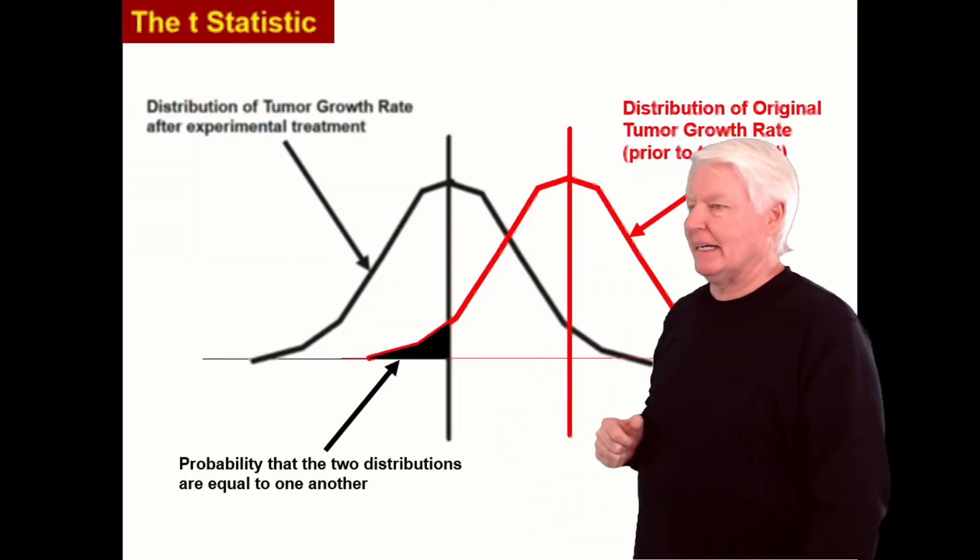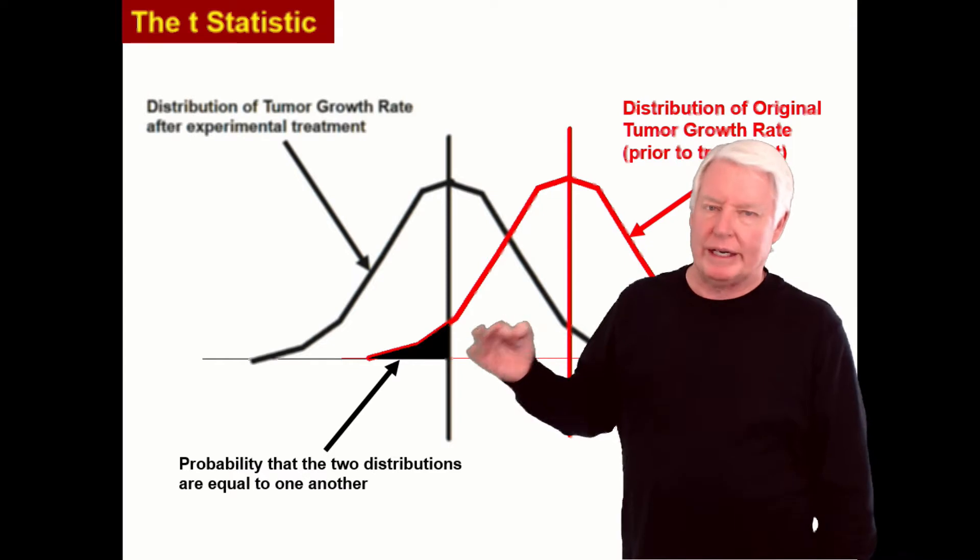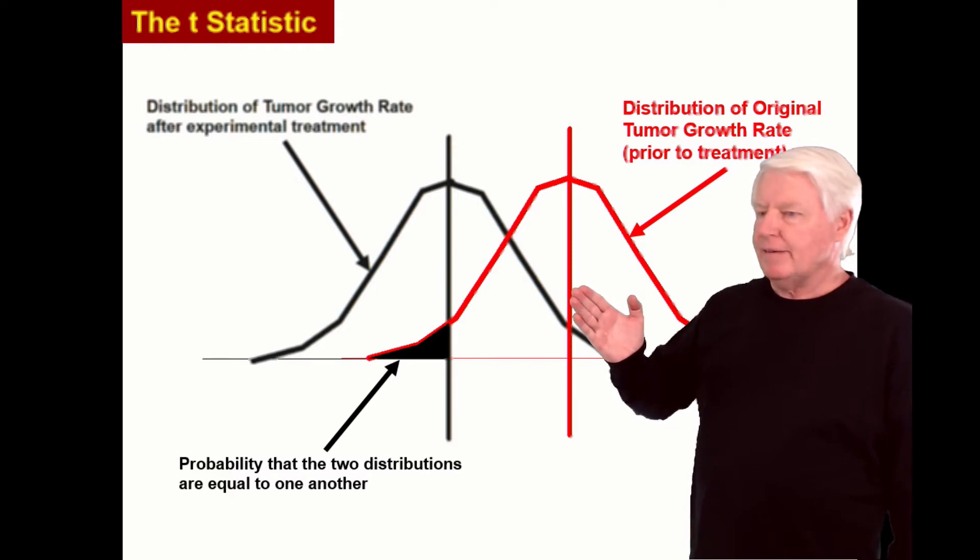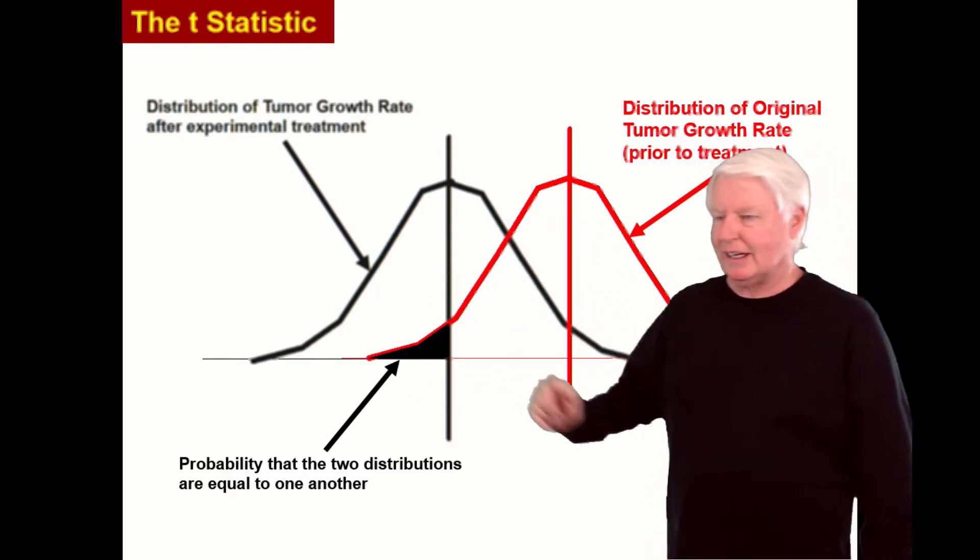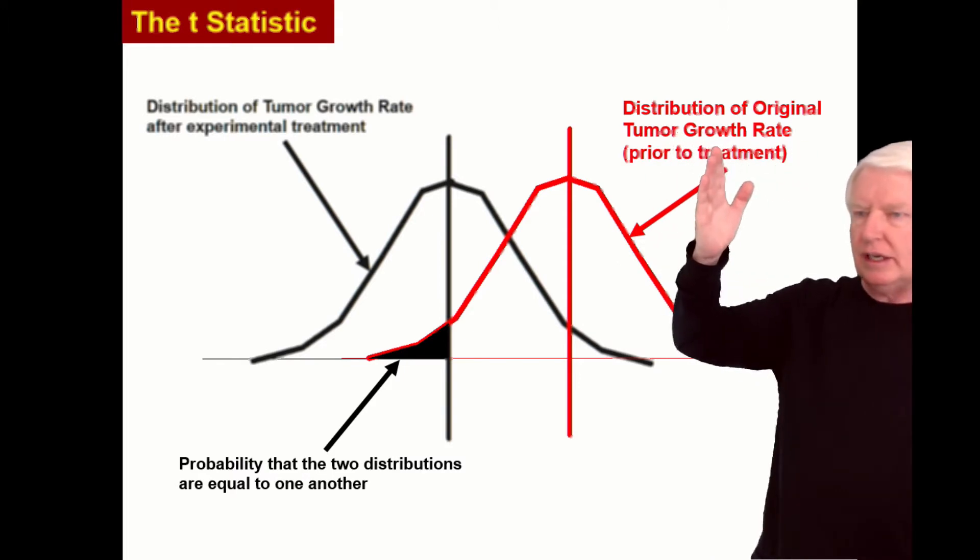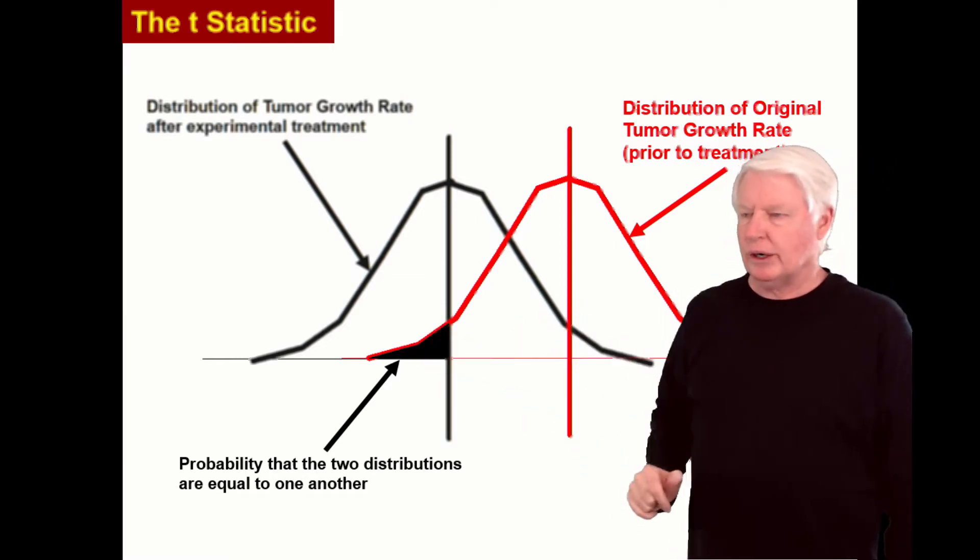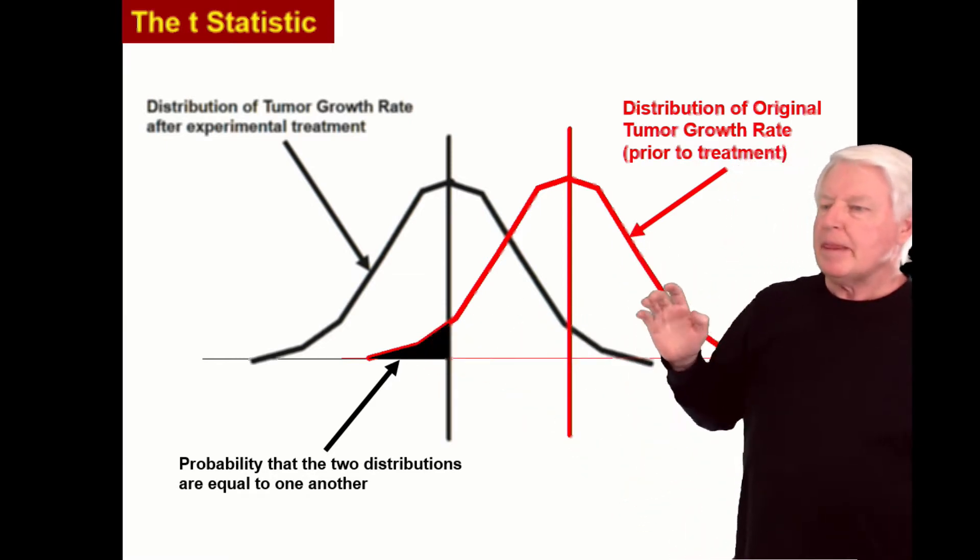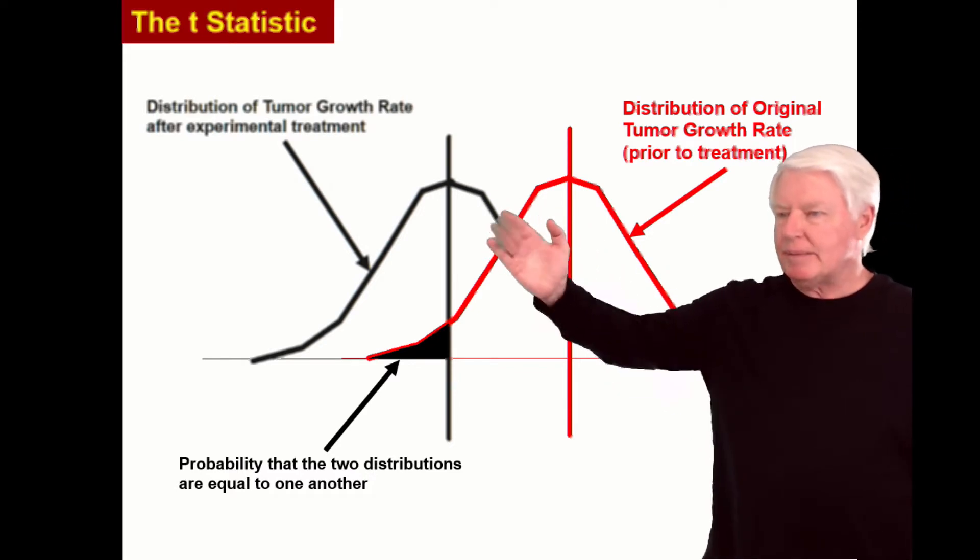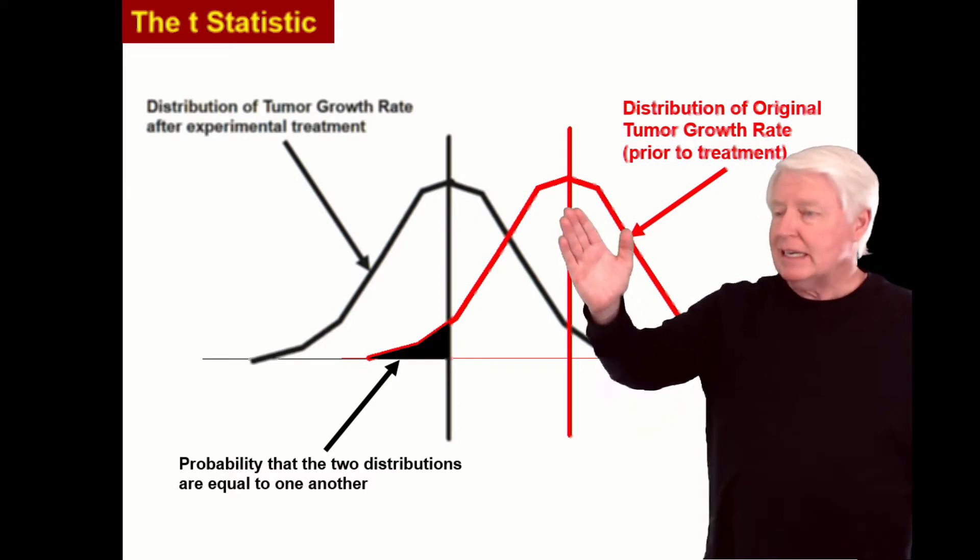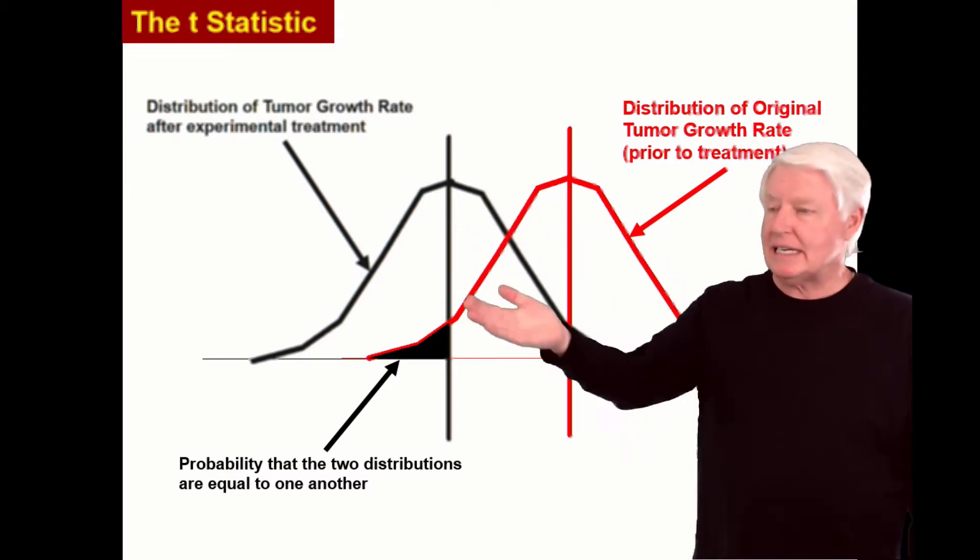Alright, back to the T-statistic. In an earlier lecture we talked about the Z-statistic, and the Z-statistic told us if something changed. For example, we have a distribution of original tumor growth rate with no treatment. Some people have higher growth rates, most are in the middle, some have slower growth rates. But then we add a treatment and we want to know if the treatment reduces the average growth rate. So we use the Z-statistic.